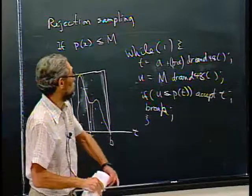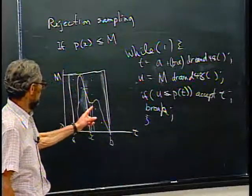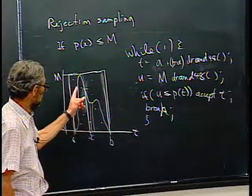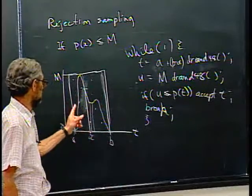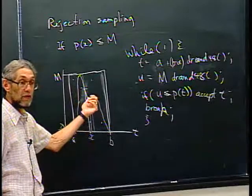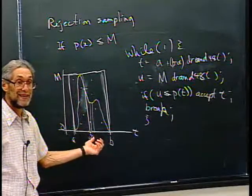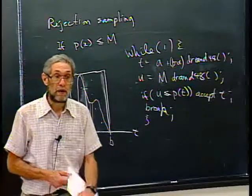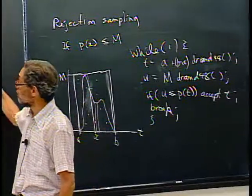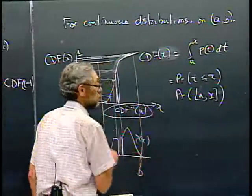You can write this as a while loop: keep generating pairs (T, U) until U ≤ p(T), then accept T. The downside is you need two random numbers instead of one, and you may need to generate many pairs — in this example perhaps twice as many as the X values you ultimately keep, making it up to four times as much work. So it's better to use the analytic inverse-CDF method when you can.